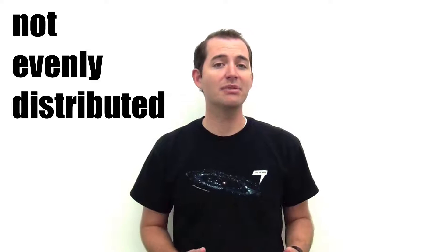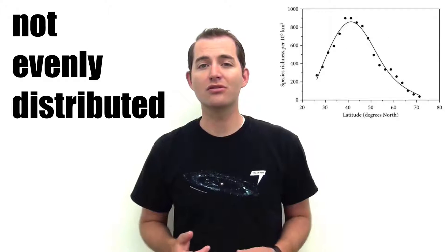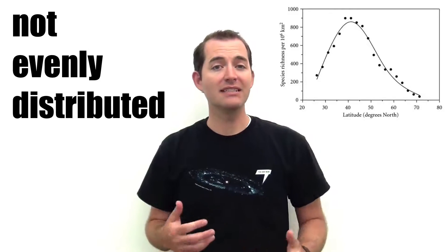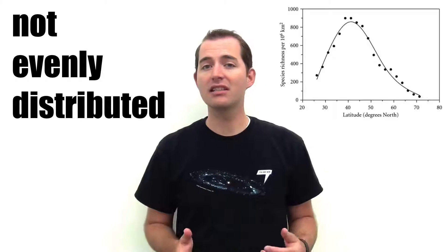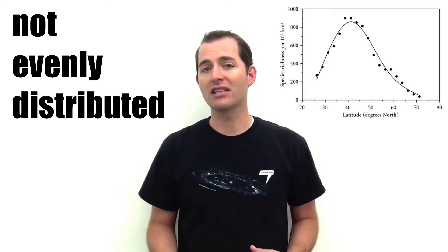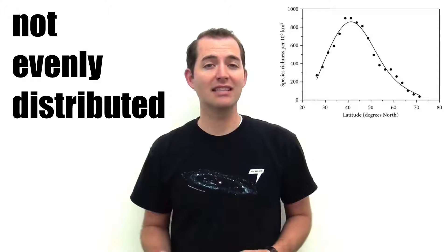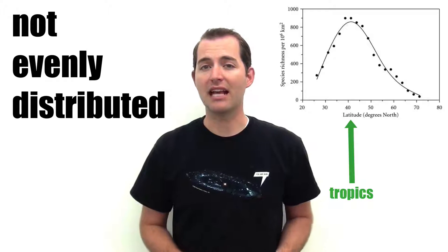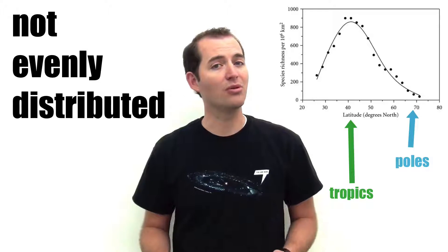The distribution of biodiversity can be seen in what are called latitudinal gradients. This means at different latitudes there are generally different amounts of biodiversity. For example, biodiversity is typically highest in the tropics and lowest at the poles.